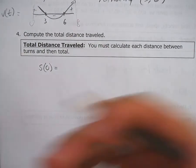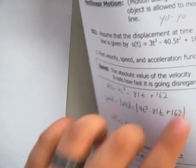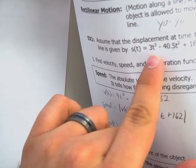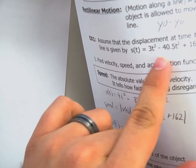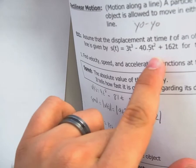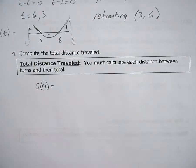And so if you plug a 0 back into your equation, this guy from the front, 3t cubed minus 40.5t squared plus 162t. If you plug a 0 in there, you get 0.